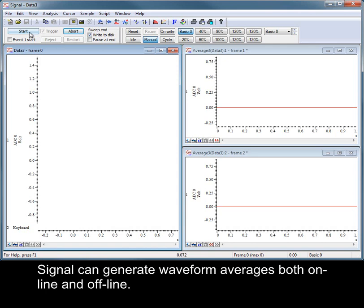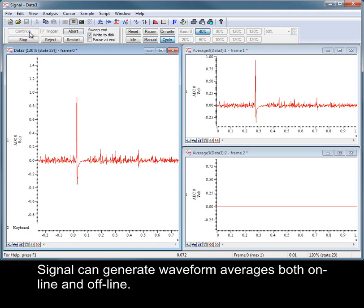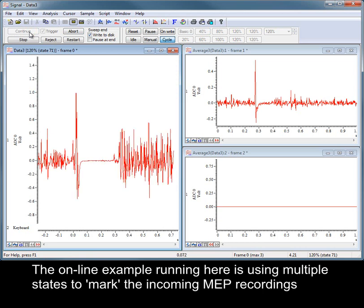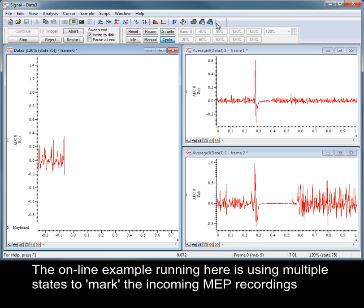Signal can generate waveform averages both online and offline. The online example running here is using multiple states to mark the incoming MEP recordings.